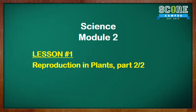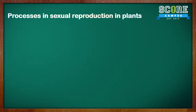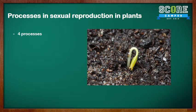This is the second part of a video series for Reproduction in Plants Science, Module 2, Lesson 1. In this video, you will recognize and understand the processes in the sexual reproduction in flowering plants. There are four main processes: pollination, fertilization, seed dispersal, and germination. We will be going through these processes in detail over the next few slides.